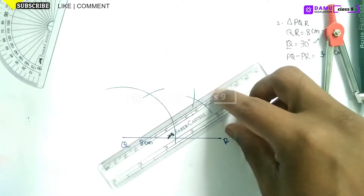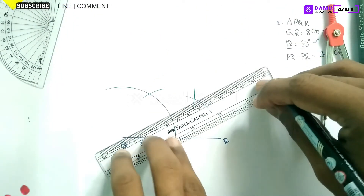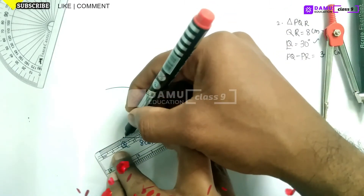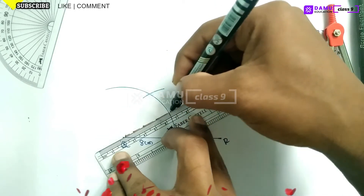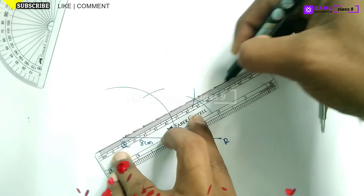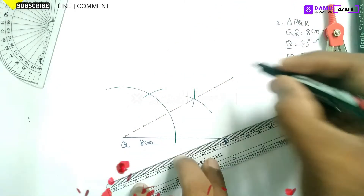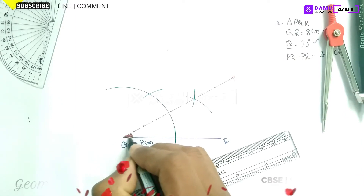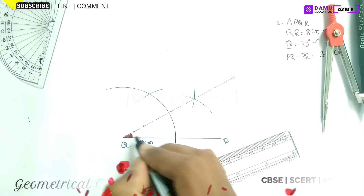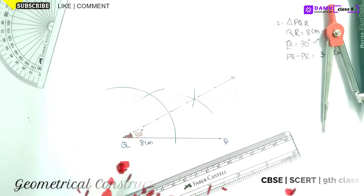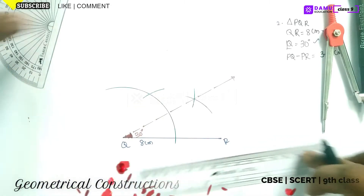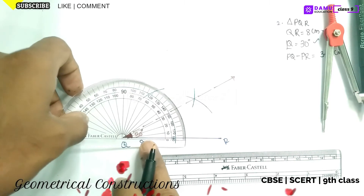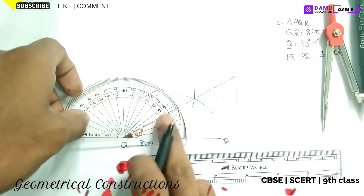Join the intersection points to get a ray at 30 degrees. This angle is 30 degrees, that is angle Q. So angle Q is equal to 30 degrees. The original arc was 60 degrees and bisecting gives us 30 degrees up to here.